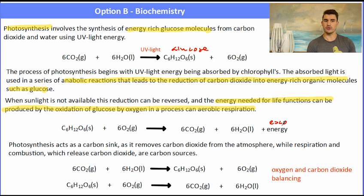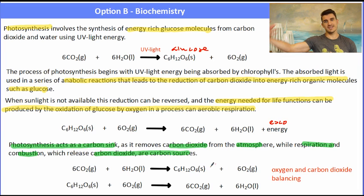When sunlight's not available though, the plant can use that stored glucose to release energy for the processes in the cell. We say that photosynthesis can act as a carbon sink because the carbon dioxide absorbed by the plant can be released when it burns the energy.